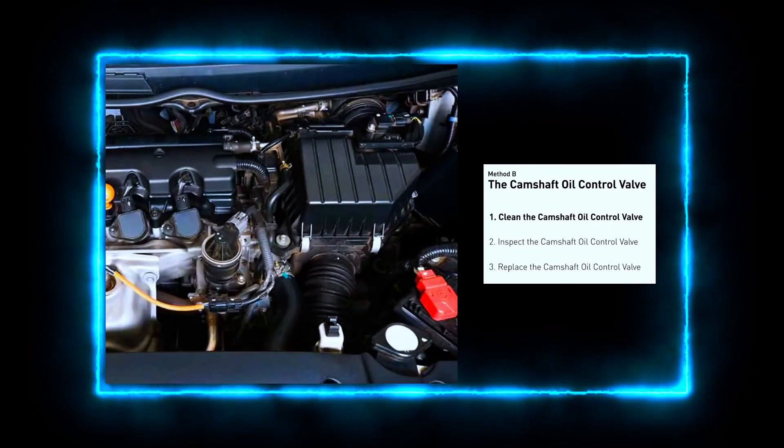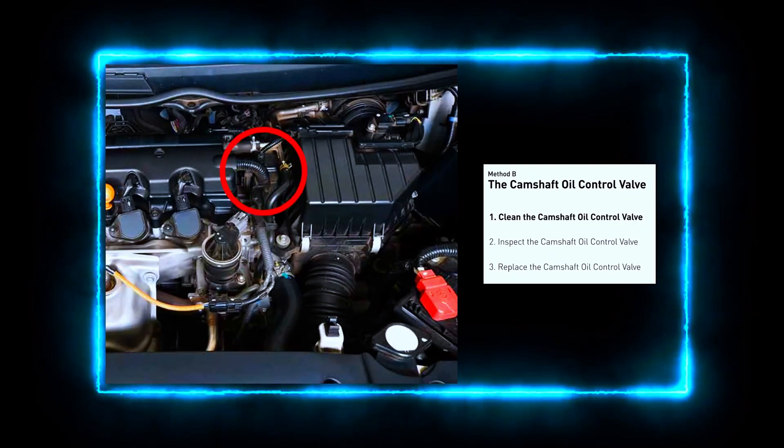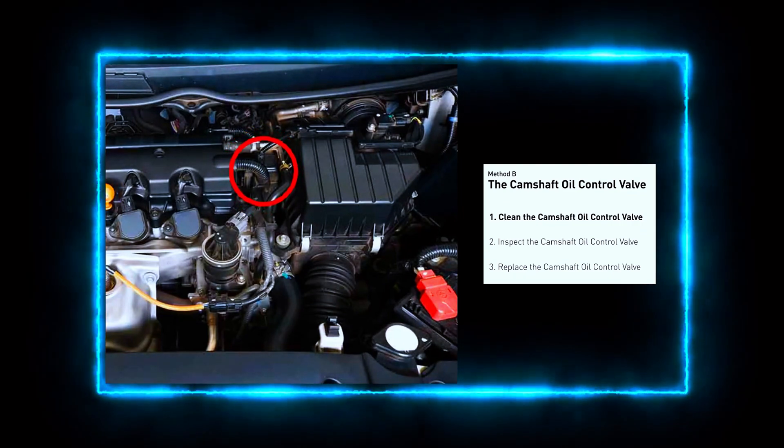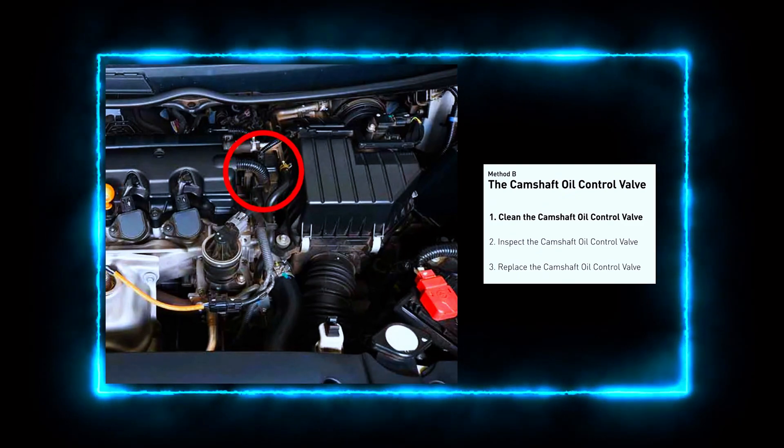Locate the camshaft oil control valve. Depending on your vehicle, it's usually mounted on the cylinder head near the camshaft. You'll typically find it bolted to the engine block with an electrical connector attached.